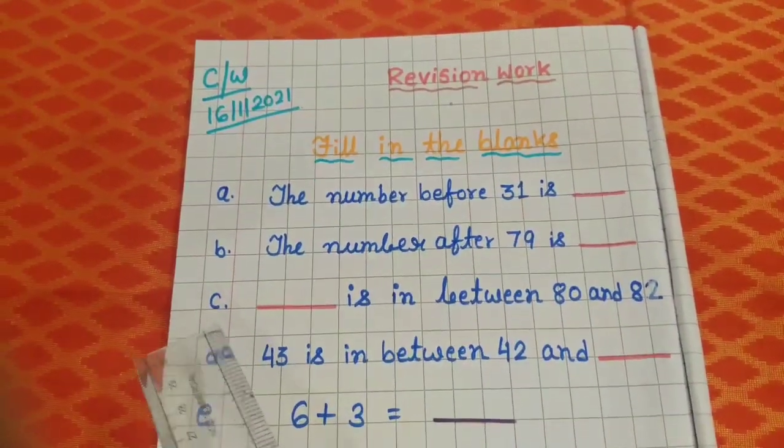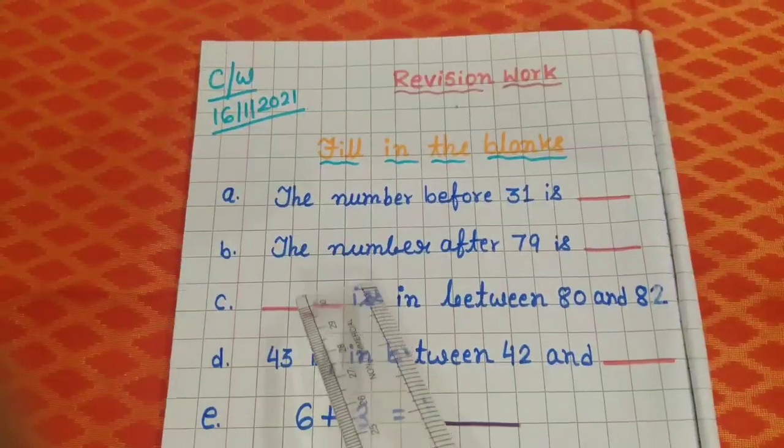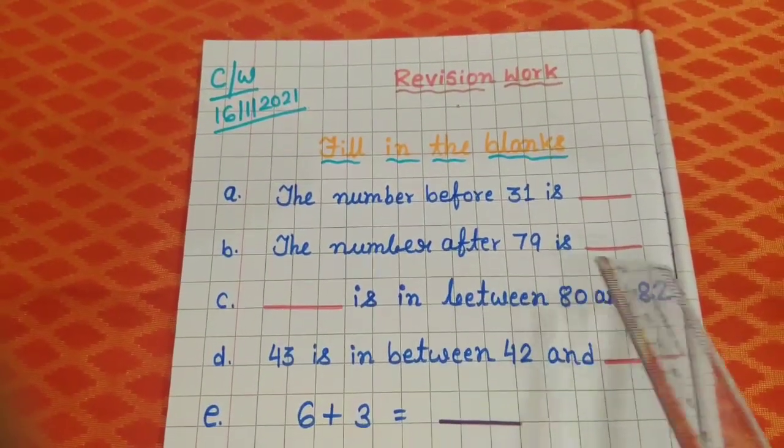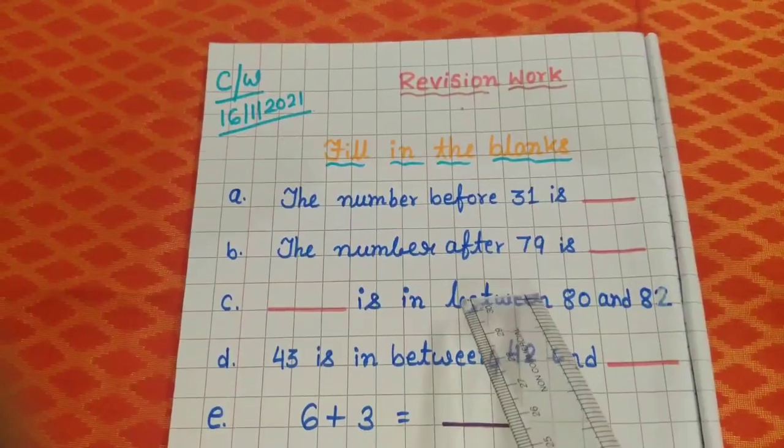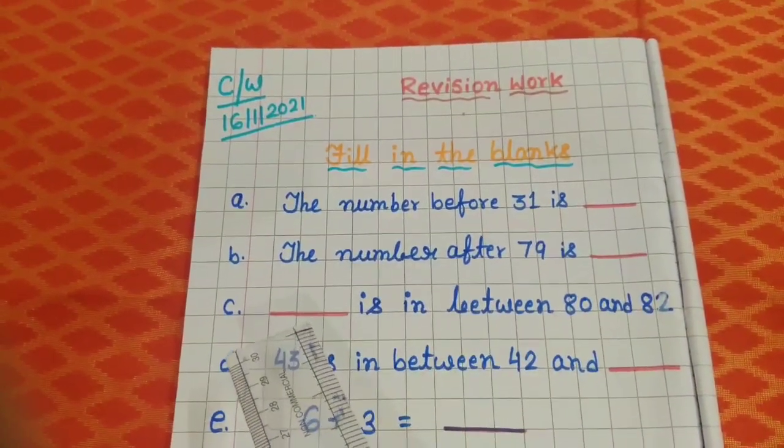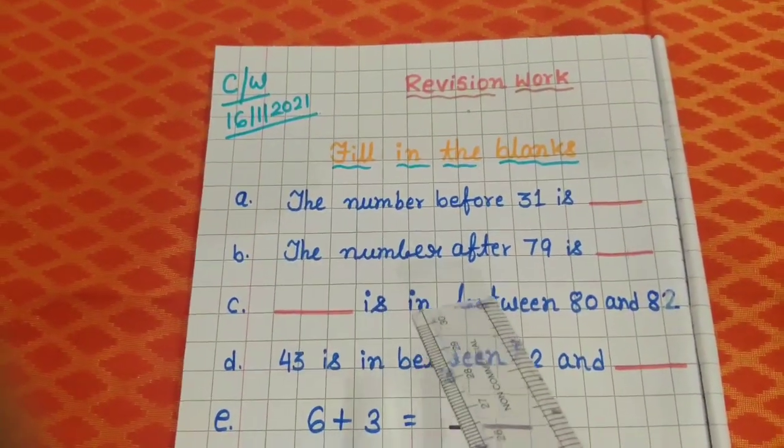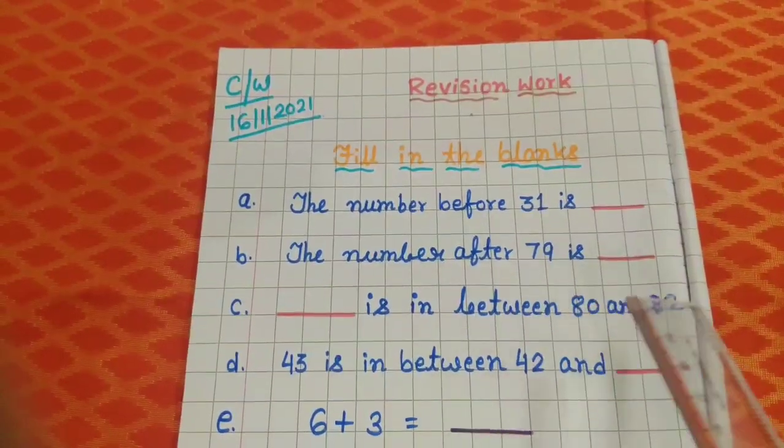Number C. Dash is in between 80 and 82. That means you have to write here what comes between 80 and 82.